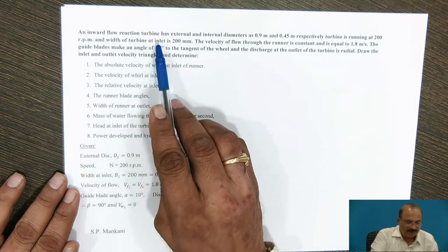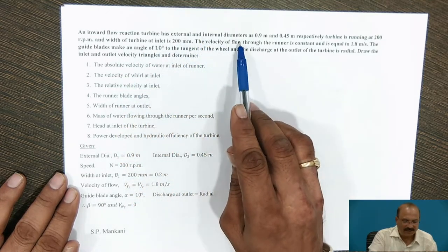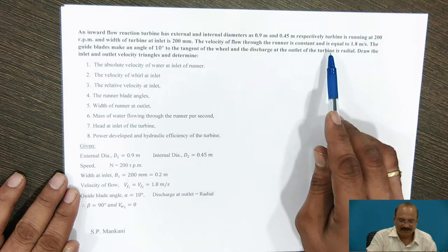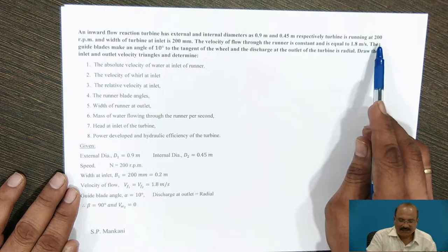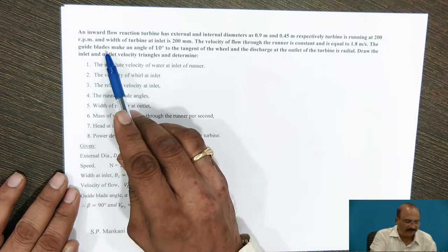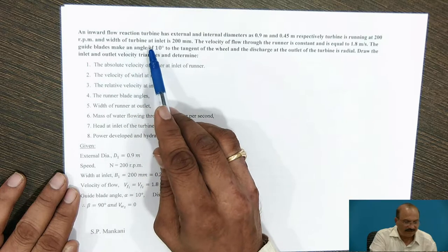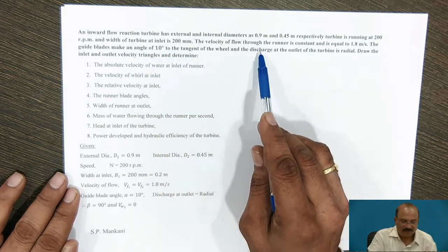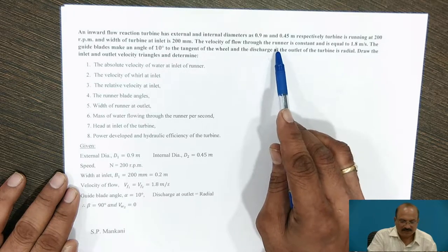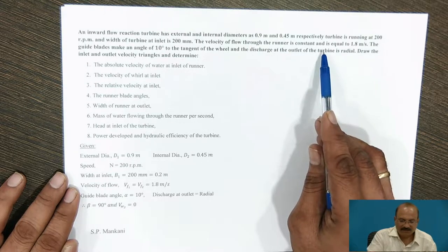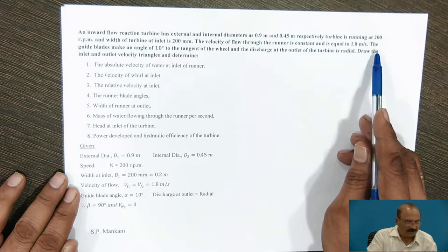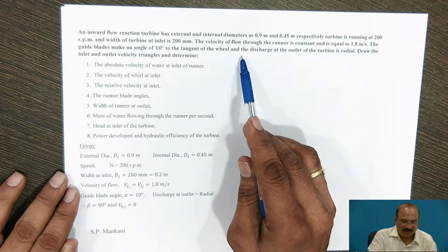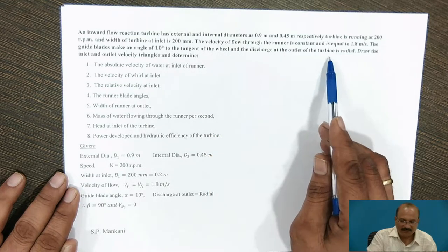An Inward Flow Reaction Turbine has external and internal diameters as 0.9 meter and 0.45 meter respectively. The turbine is running at 200 rpm and width of turbine at inlet is 200 mm. The velocity of flow through the runner is constant and equal to 1.8 meters per second. The guide blades make an angle of 10 degrees to the tangent of the wheel, and the discharge at the outlet of the turbine is radial.